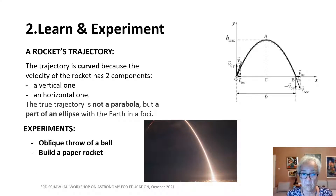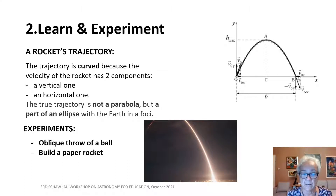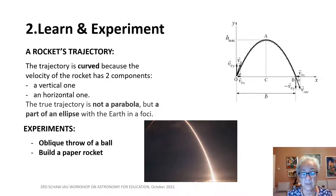To put in evidence this kind of trajectory, we can make different experiments, like the oblique throw of a ball or building a paper rocket.